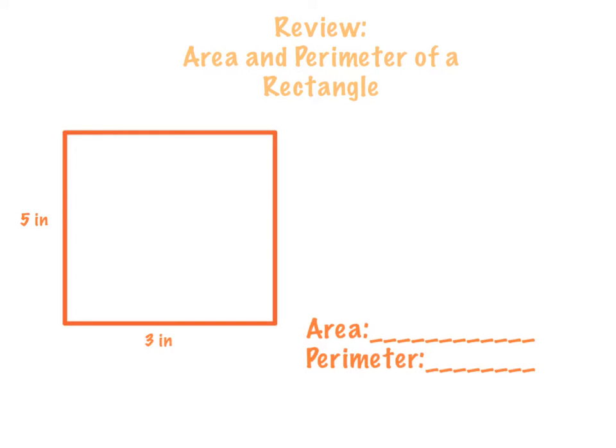In our last lesson, we talked about finding the area and perimeter of a rectangle. We will review that now. In your notebook, I would like you to pause this video and copy down the rectangle below. In my rectangle, I have the length as 3 inches and the width as 5 inches. Once you have recorded that into your notebook, then you may press play.